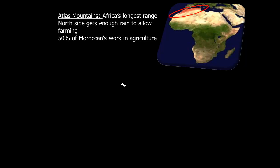The first mountain range is the Atlas Mountains, located in the northwestern tip of Africa — Africa's longest mountain range. The north side receives a lot of rain, which allows farming, but the mountains also act as a barrier preventing rainfall from reaching the rest of the region. About half of Moroccans work in agriculture because Morocco catches the majority of rainfall entering Africa, while the mountains prevent it from going deeper into the Sahara Desert.